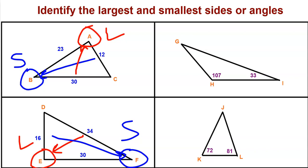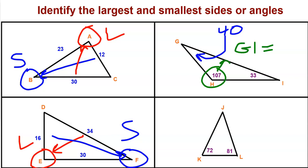Moving to the upper right-hand corner, we have some angles in the triangle. We know two of the angles — 107 degrees and 33 degrees — and we can calculate that together that's 140 degrees, so the remaining angle is 40 degrees. We have angles of 33, 40, and 107. The longest side is opposite the largest angle, so GI is the largest side. And since 33 is the smallest angle, the side opposite that — GH — is the smallest side.